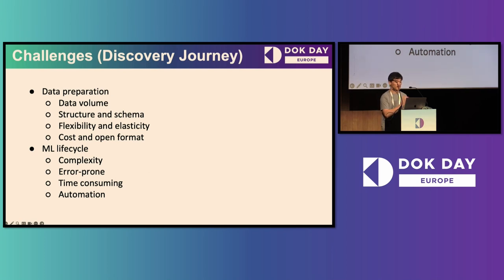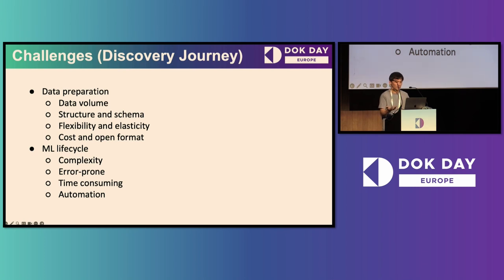Flexibility and elasticity are also important. Data usually comes from multiple data sources, and there are different types of workloads in data preprocessing — like interactive or ad hoc data queries, or batch processing. Of course, platform cost is one of the important factors, and whether the platform uses open formats or vendor-locked formats also matters.